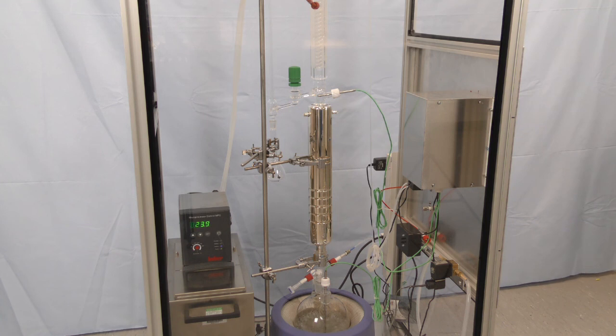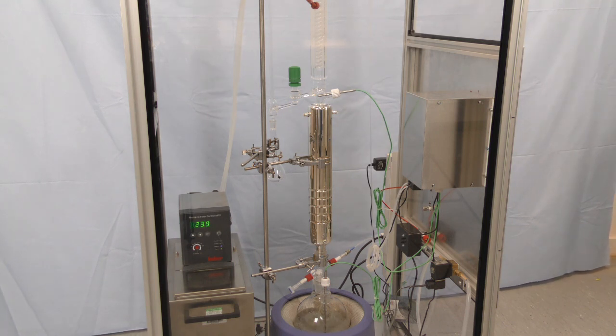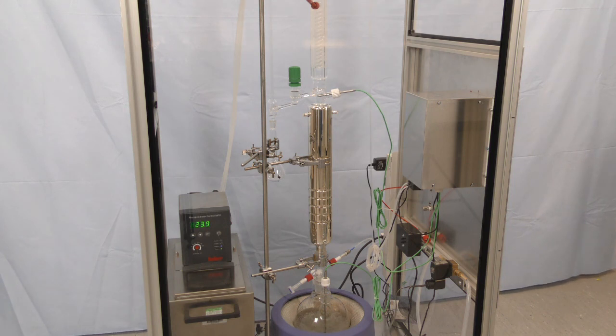Here's the apparatus I showed you in the previous video. We have the reboiler at the bottom, the silvered column containing ten sieve plates in the middle, and a water-cooled reflux condenser at the top.